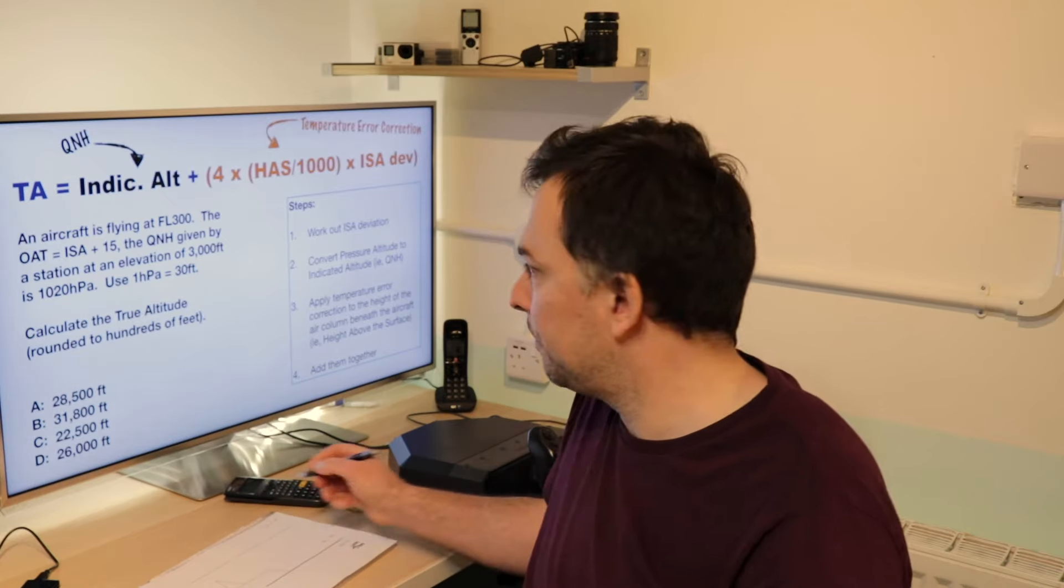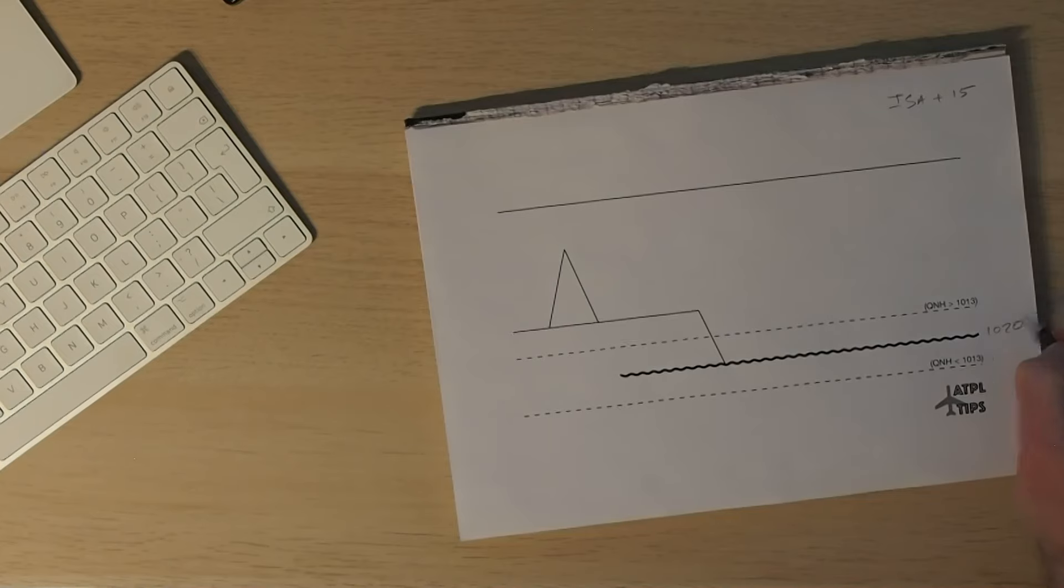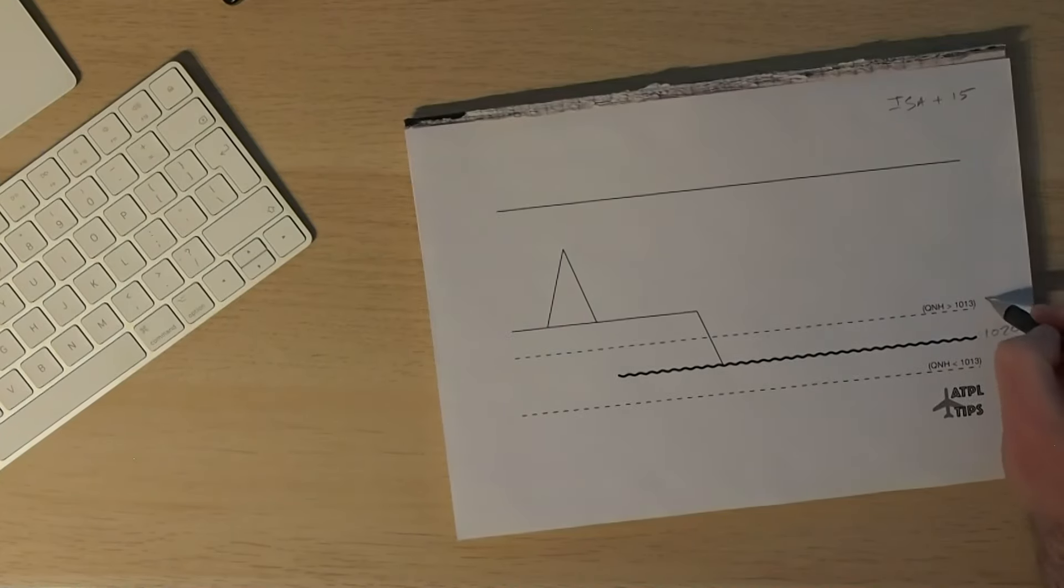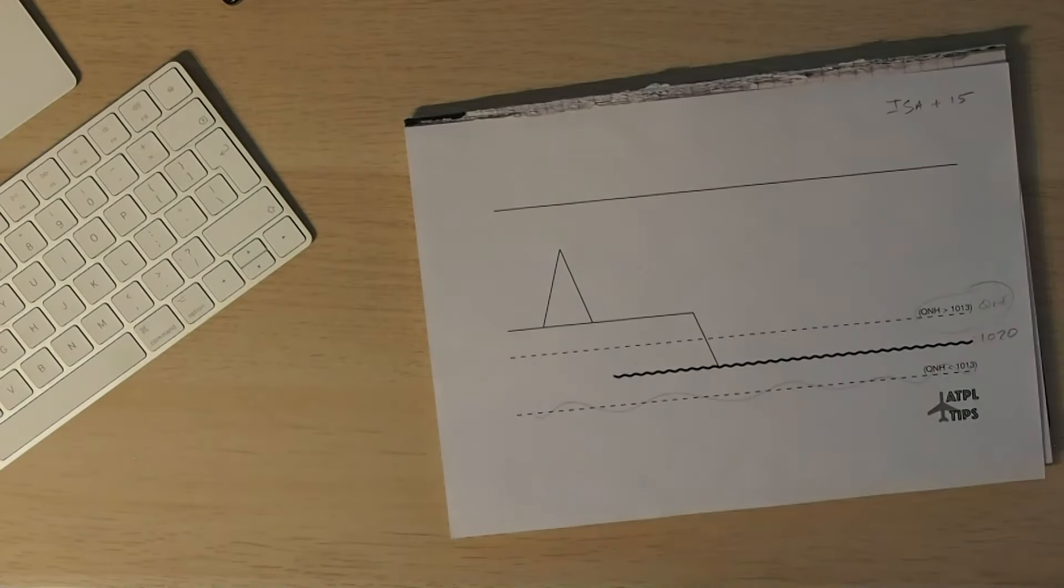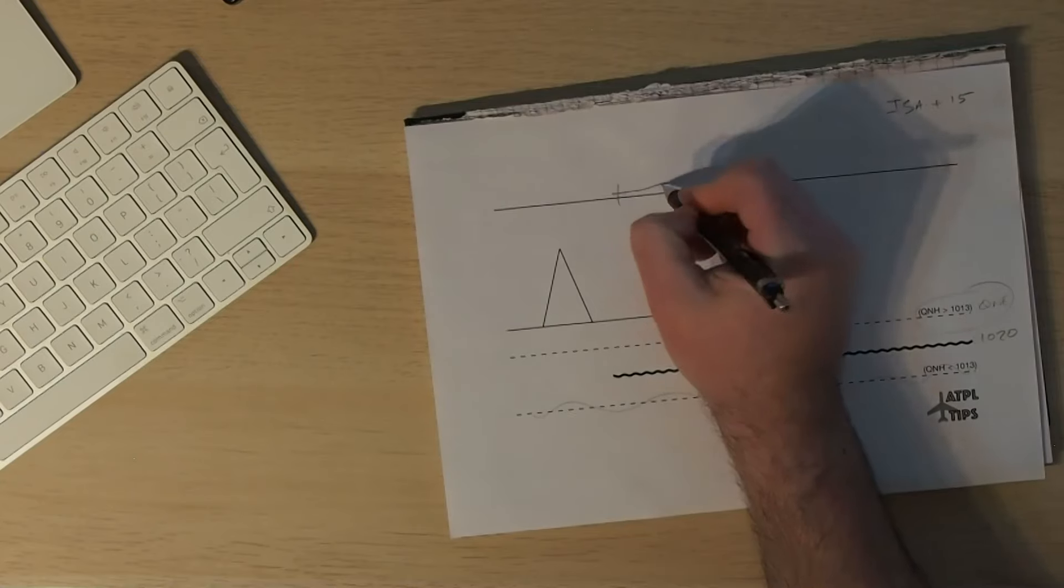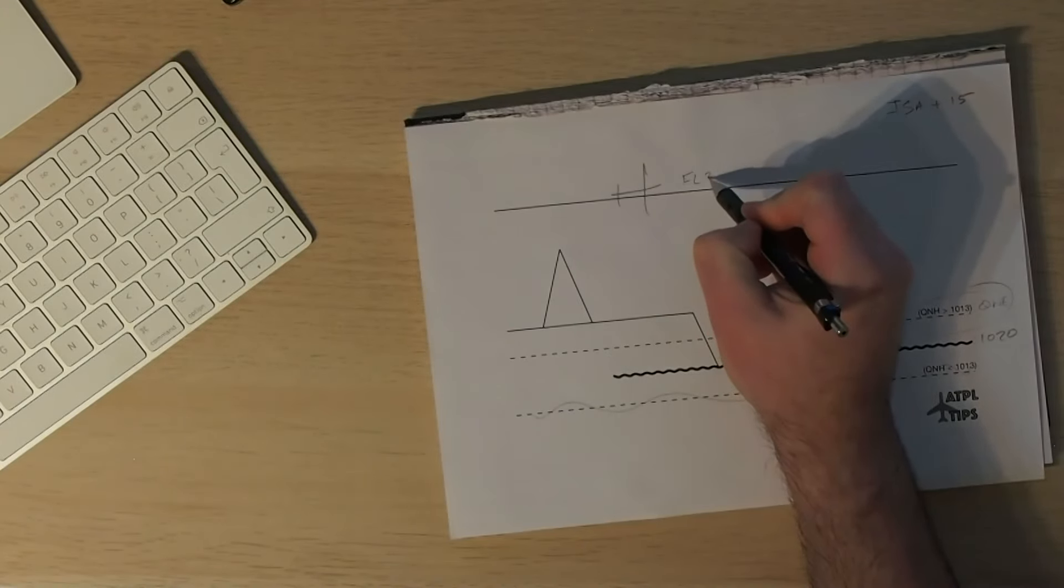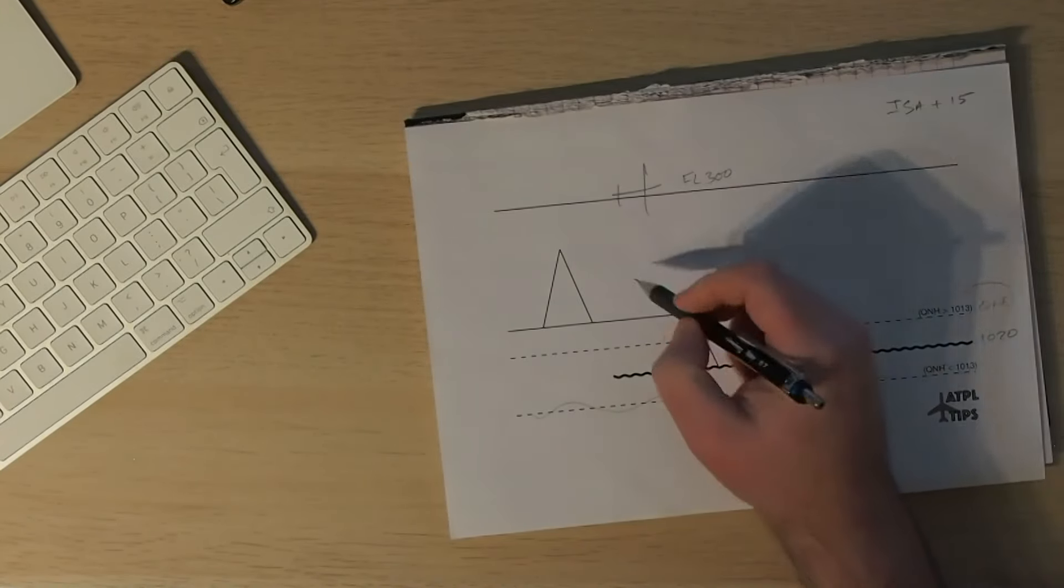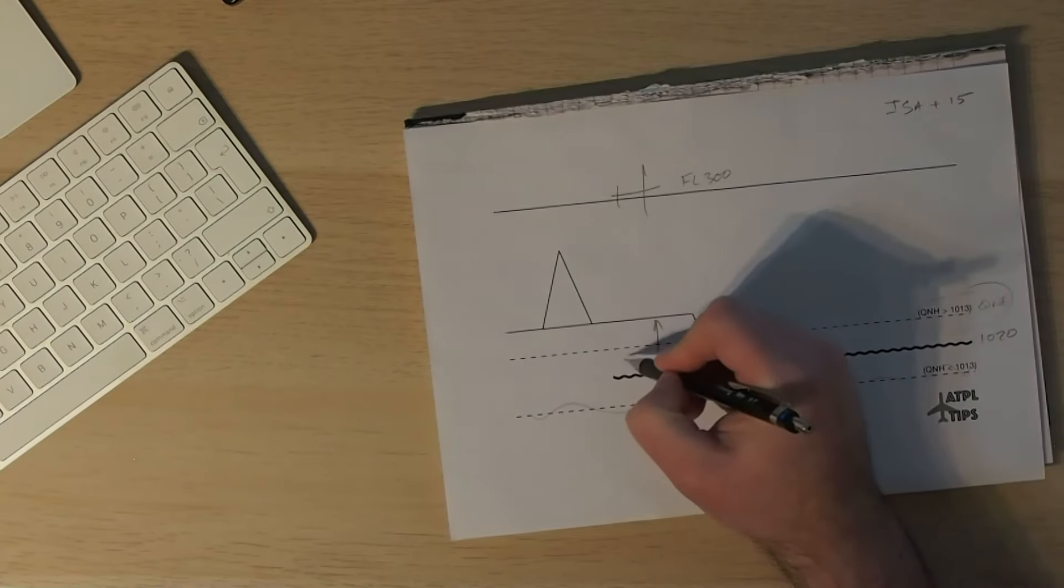The first thing that we're going to do is look for our ISA deviation. Now, the question actually tells us explicitly that this time we are ISA plus 15. Superb. That was easy. Our QNH today is 1020 and that means that our QNE is going to be above the surface of the sea. And let's start setting out the page. So here's our plane. We are at flight level 300 and the elevation of our airfield is 3000 feet.